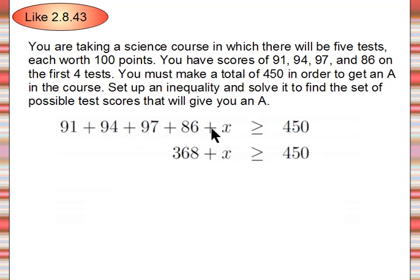So I'm just adding these numbers together and leaving that plus X there. I want X to be completely by itself, so I'm going to subtract, this is a positive 368, I'm going to subtract 368 from both sides so that I won't have any more numbers over here on the left, and X will be by itself. So then I have to subtract 368 from 450, and that gives me 82.